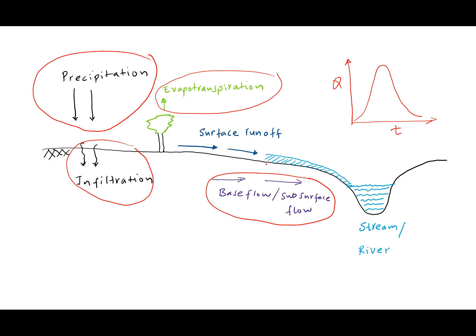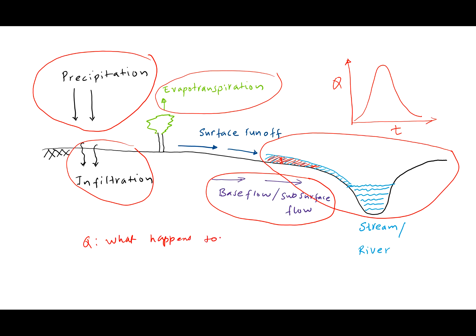What we are interested in learning now is what happens to the water that is flowing on the surface into the stream — how deep this water is on the surface and what happens to it when it enters the main channel. We will focus mainly on the main channel and how Manning's equation is used there, though Manning's equation can also be used to find the depth of overland flow. The key question is: what happens to water after it enters the river channel?